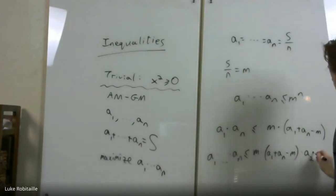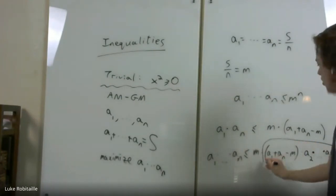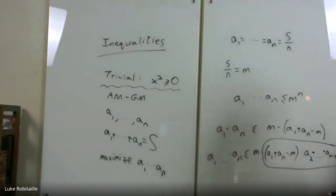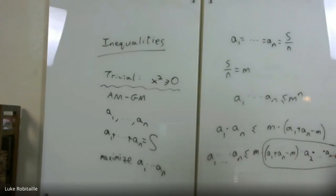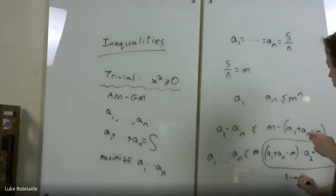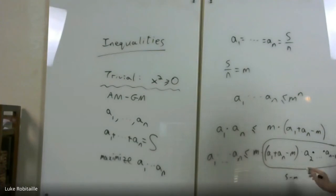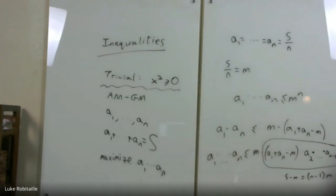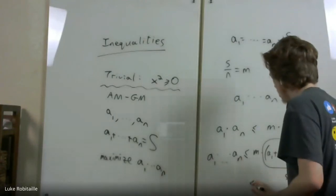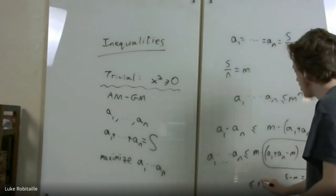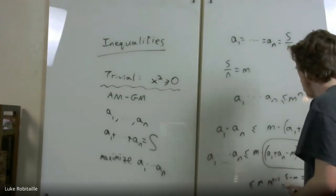Now this lets us induct down. We now have N minus one real numbers, and their sum is S minus M, which equals (N−1) times M, meaning their mean is M. By the inductive hypothesis, their product is at most M to the N−1, and so we're just done.